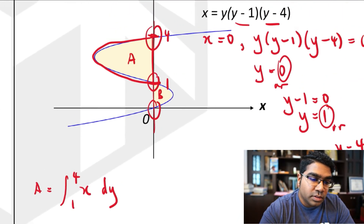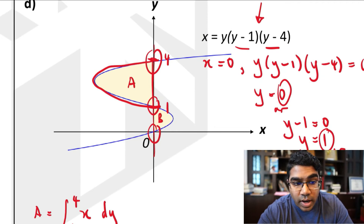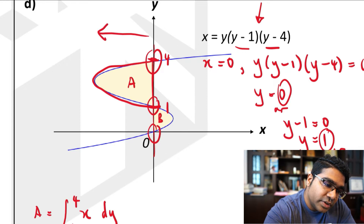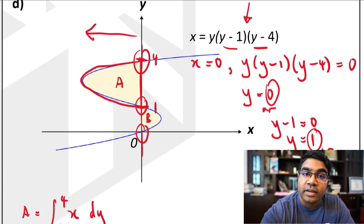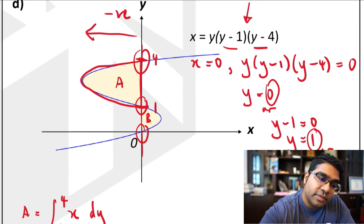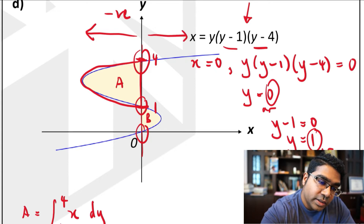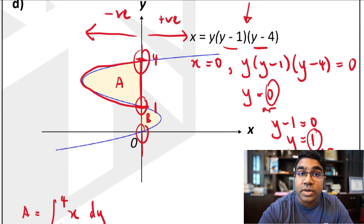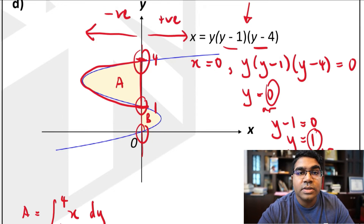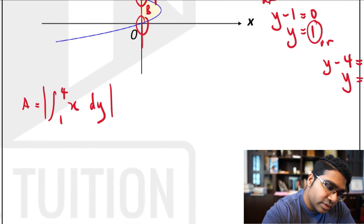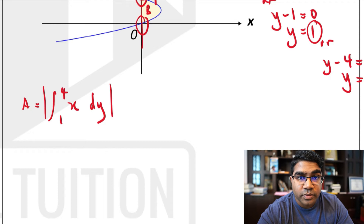When it comes to integration with respect to y, you have to look at where the area lies. If it is on the left of the y-axis, this is a negative region — all the integrals in this region will have a negative value. If it is on the right side, the integrals will have a positive value. Since area cannot be negative, we need to use modulus to get a positive value.